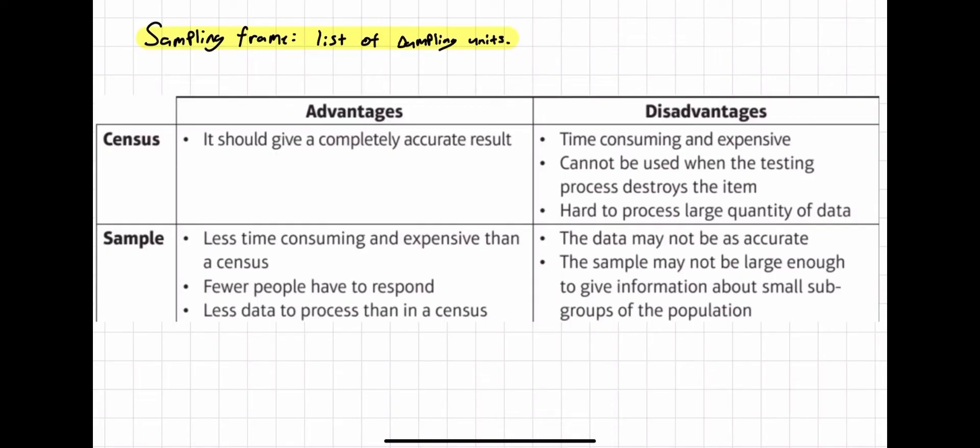It's hard to process large quantity of data because it's just going to take long. Sampling advantages are that it's less time consuming and expensive than a census because obviously you're not asking every single person or measuring every single thing. Fewer people have to respond, and there's less data to process than a census.